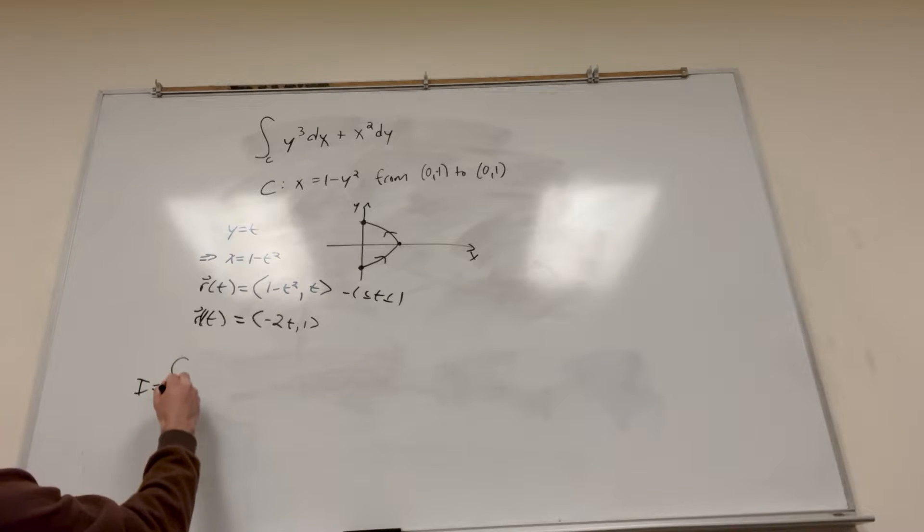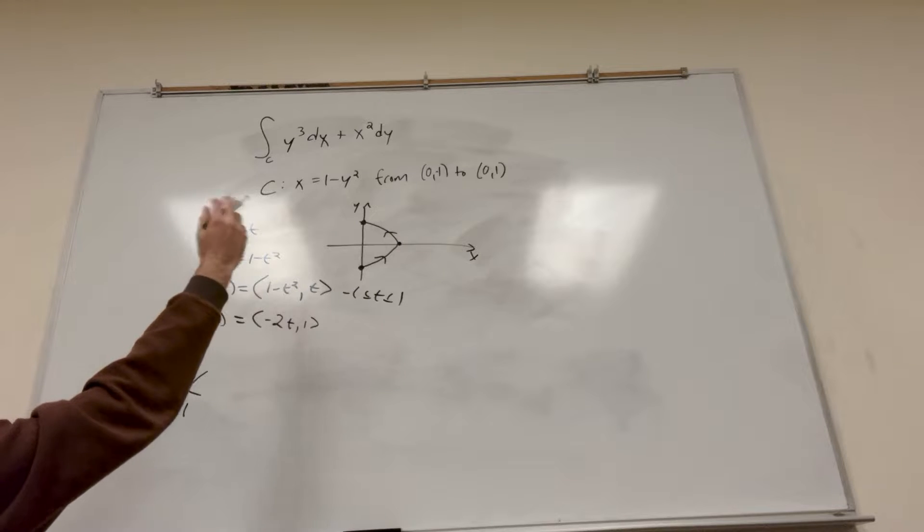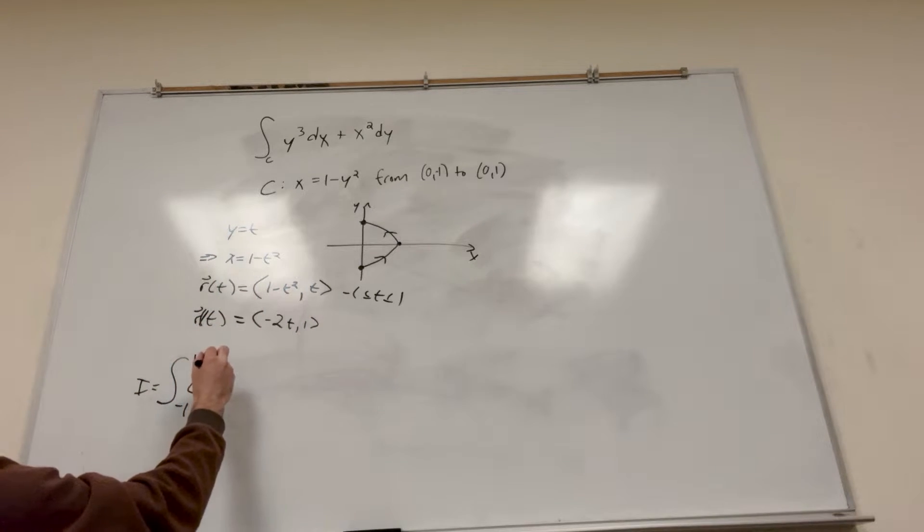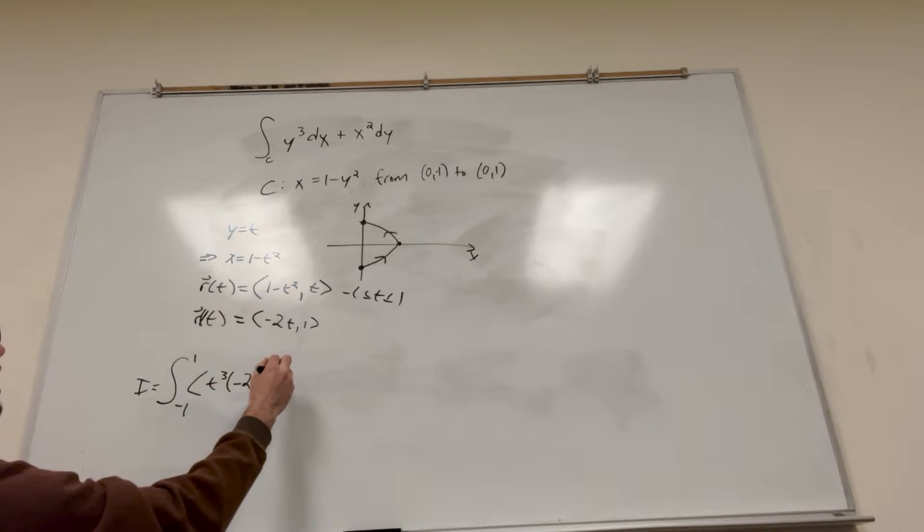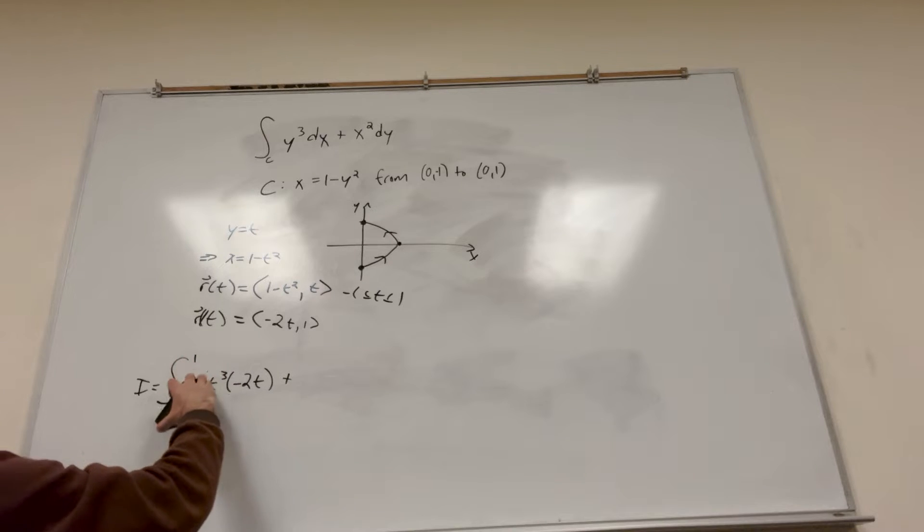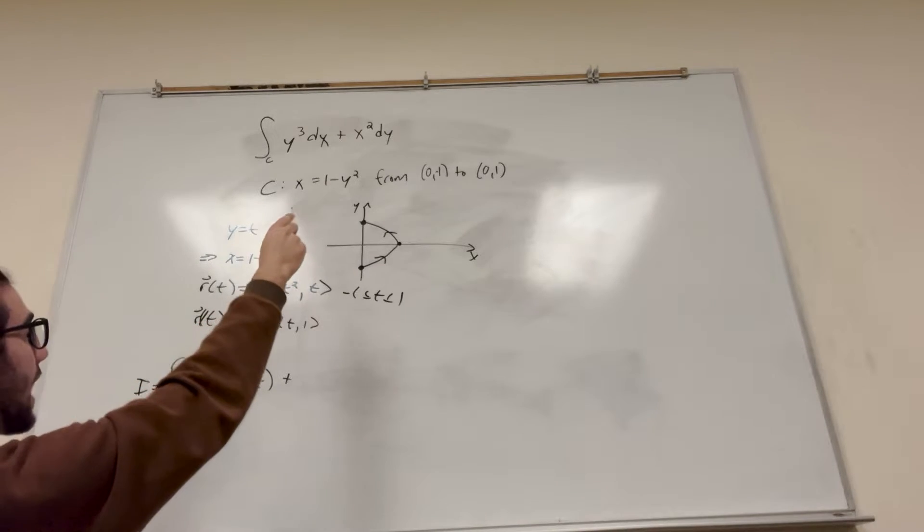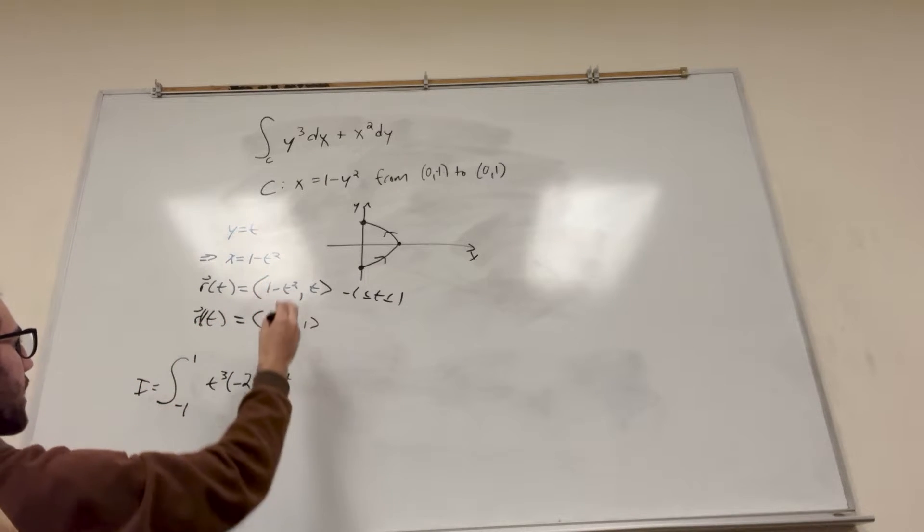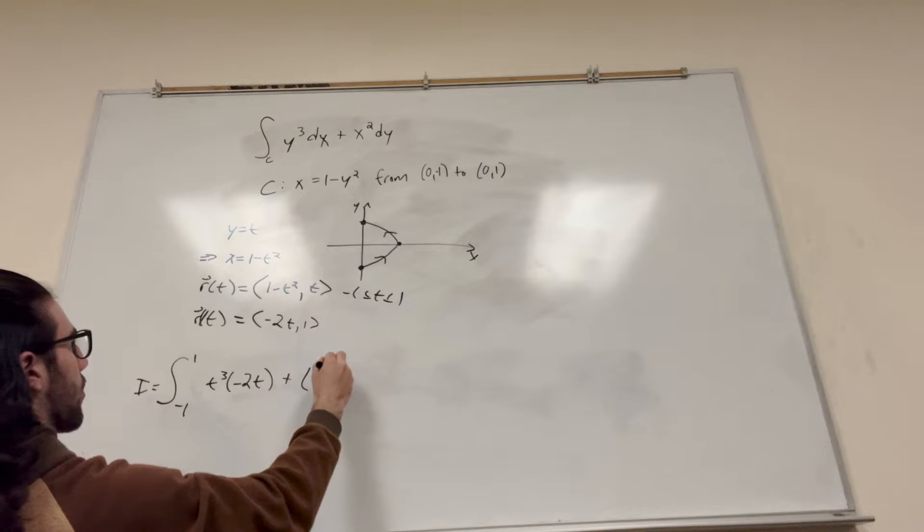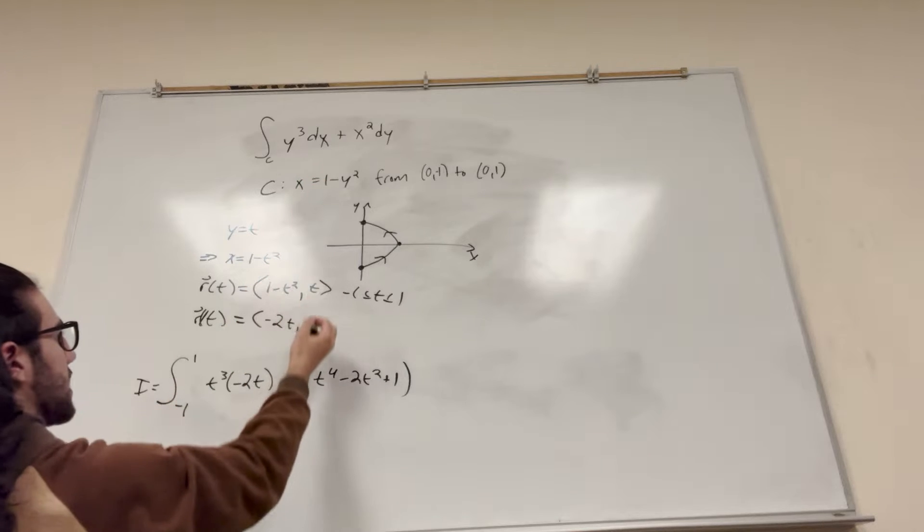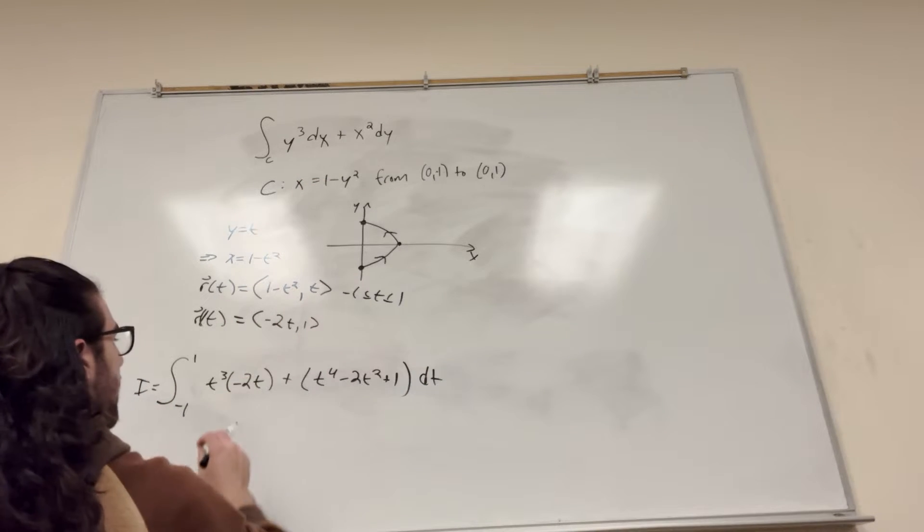Let's just set up our integral, though. So it goes from -1 to 1, right? So we have our thing. So we have y³. So what is y³? Well, it's going to be t³, because y = t. But then dx, you have to plug in this. So it's going to be -2t. And then plus, actually, I'm not doing this right. Right? Yeah, I'm not doing that right. And then it's going to be plus x². So you're going to have to factor out this. So it's going to be t⁴ - 2t² + 1. But then multiply it by dy, which is just 1. So perfect, dt. And this is it.